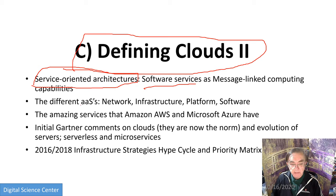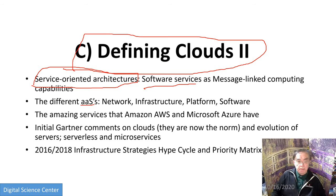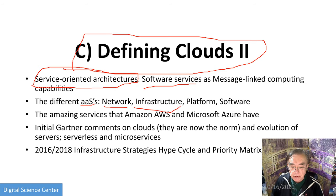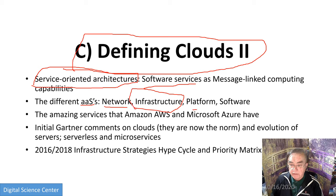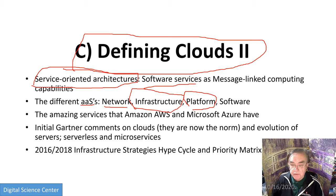We have the as-a-service concepts, which are generally applicable but first came into existence through clouds. We have infrastructure as a service, which was the early cloud offerings; platform as a service, which is essentially the operating system for the cloud; and software as a service, which are applications.